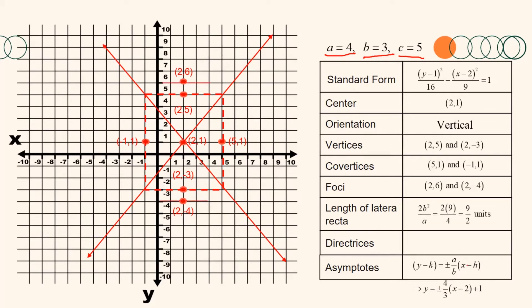The length of the latera recta is represented by 2b²/a. Substituting b² = 9 and a = 4, we get 2(9)/4 = 9/2 units. Since the hyperbola is vertically oriented, the directrices are horizontal lines with equation y = k ± a²/c. Substituting k = 1, a² = 16, and c = 5, the directrices are y = 1 ± 16/5, which simplifies to y ≈ 4.2 and y ≈ −2.2. With these elements, we can now draw the hyperbola.